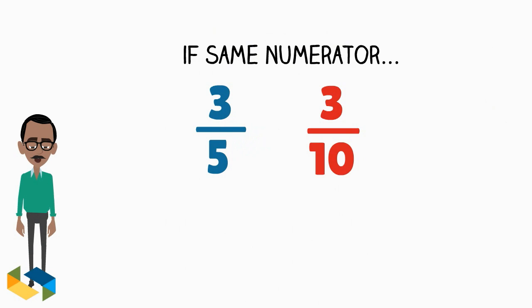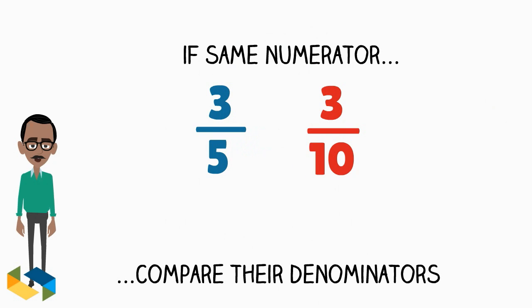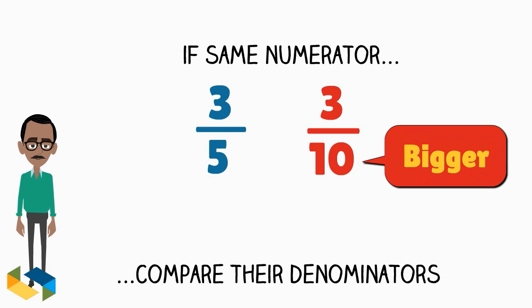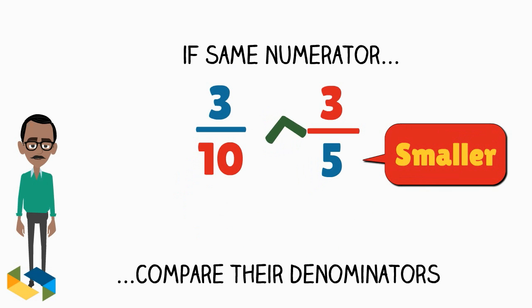So, when you have two fractions with the same numerator, just compare their denominators. The bigger the denominator, the smaller will be that fraction. And the smaller the denominator, the bigger is the fraction.